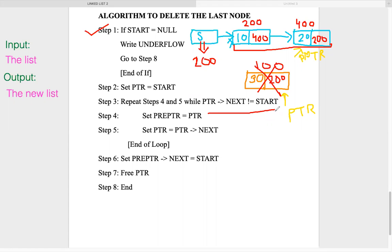This ends the lecture on circular linked list operations. The algorithms for insertion and deletion after a given node are given as an assignment. By referring to the single linked list algorithms and the changes to the checking condition discussed here, you should be able to write those algorithms. If you have any difficulty, feel free to contact me, and we may discuss it in the next lecture.